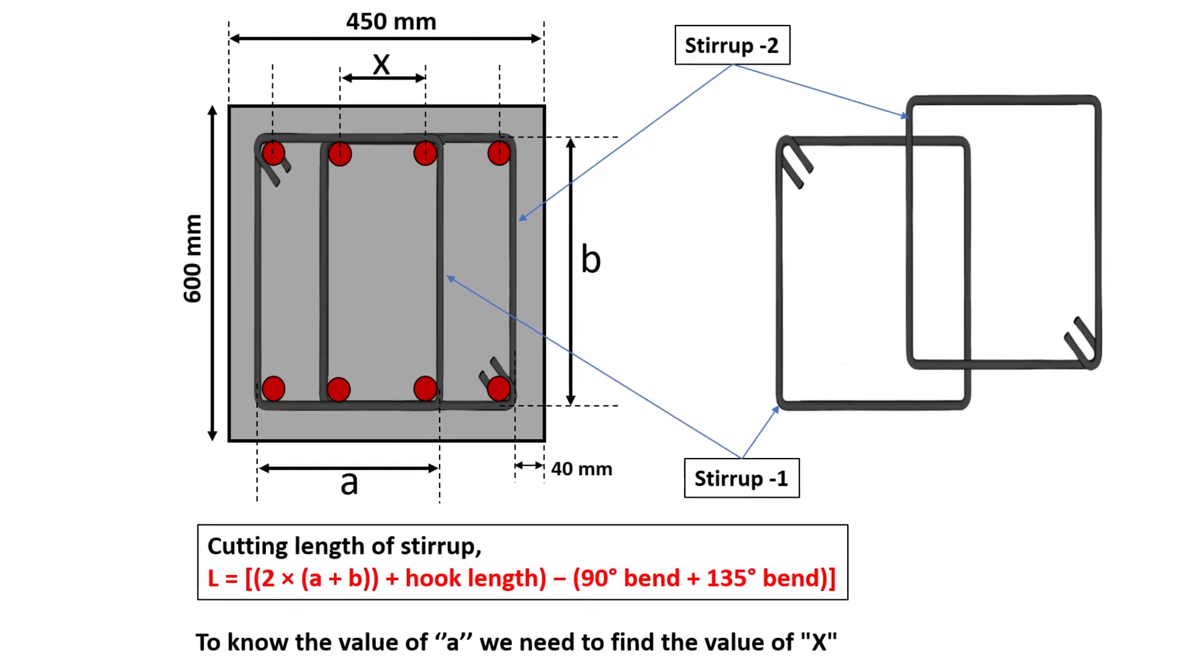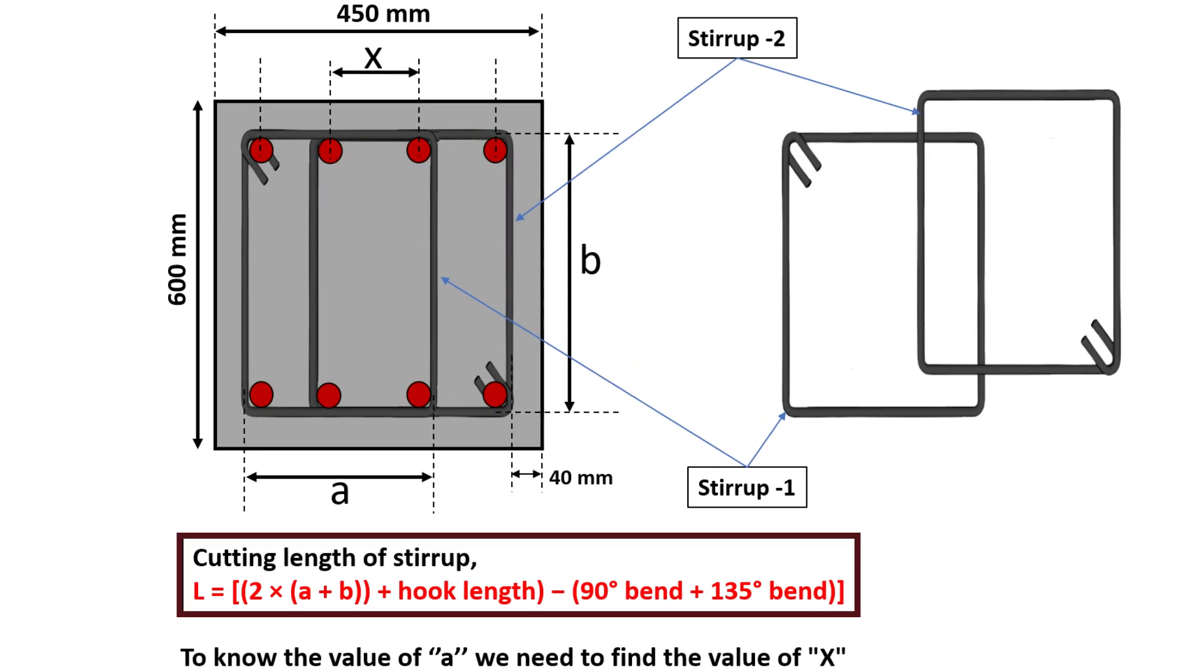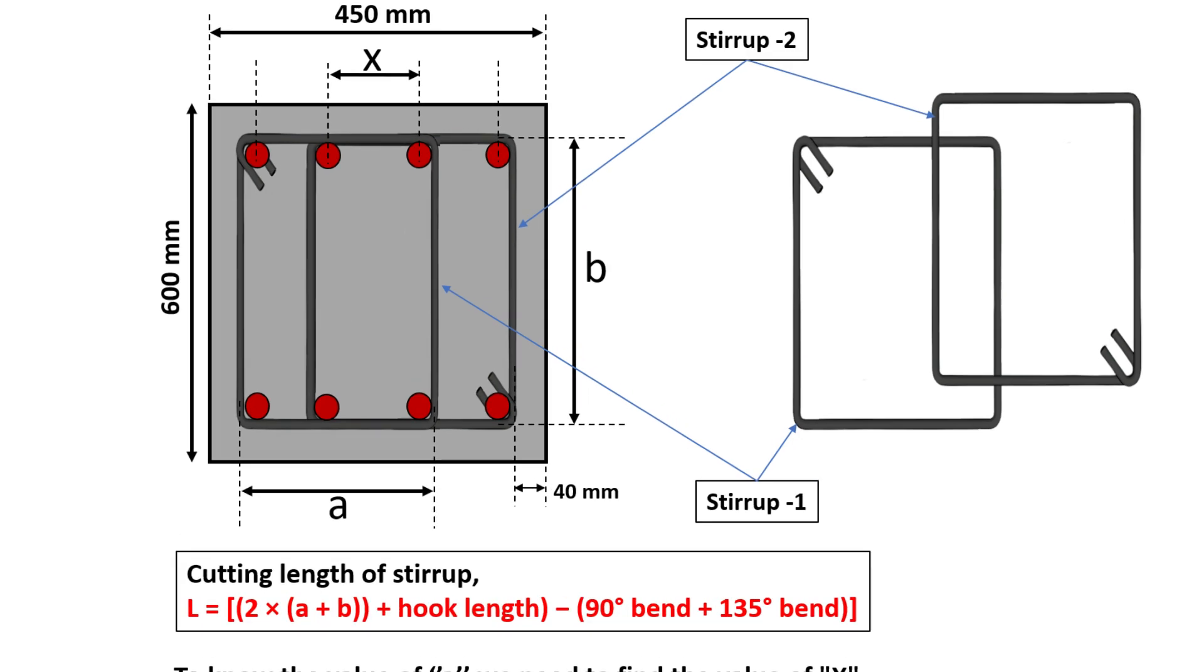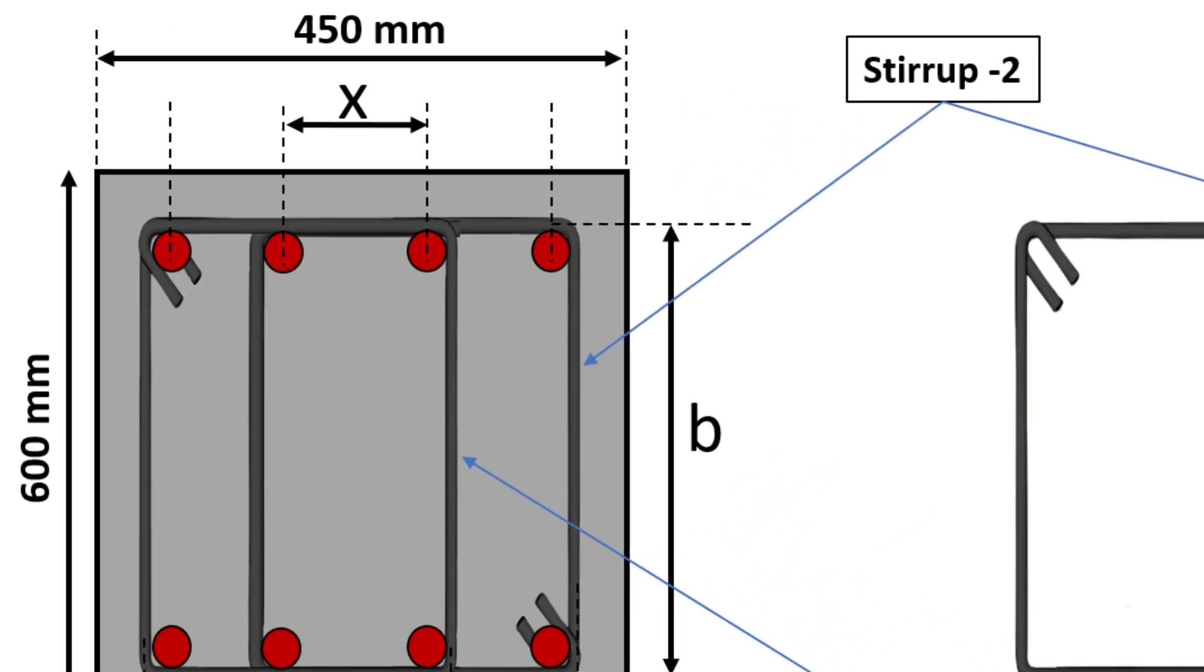The formula to calculate the cutting length is given by: To know the value of a, we need to find the value of x, which is the center to center spacing between the longitudinal bars along the horizontal direction.